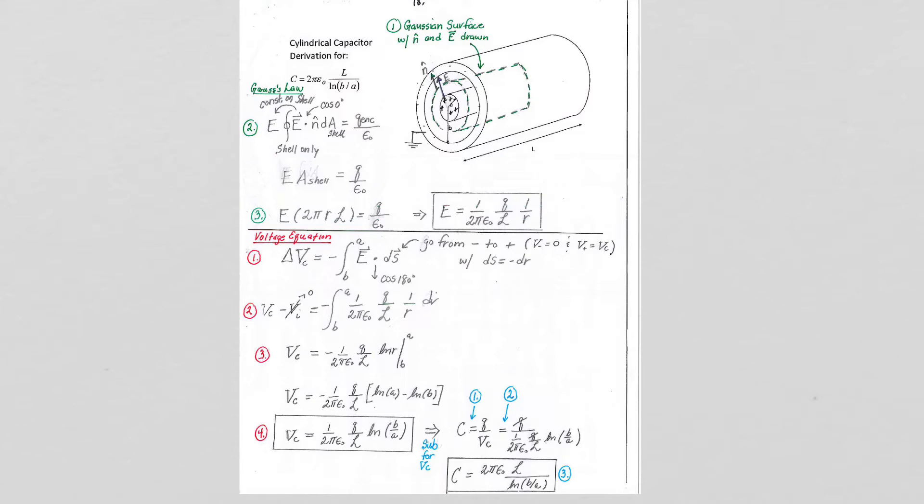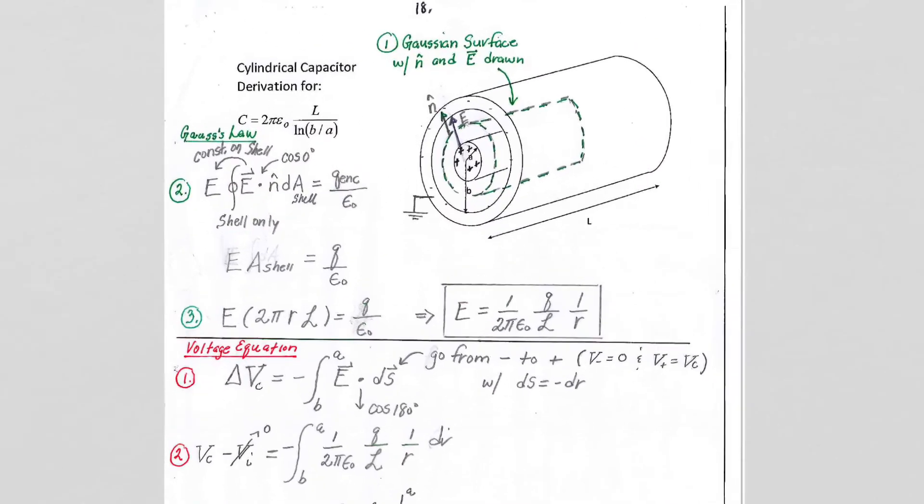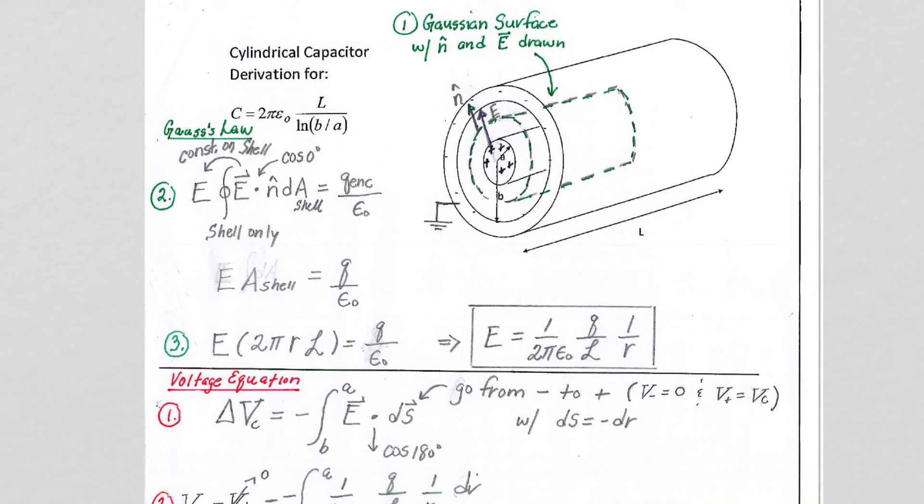So the cylindrical capacitor has an inner solid cylinder, I'm going to zoom in here now. It has an inner solid cylinder that's positively charged, and the outer cylinder is a cylindrical shell where all of the negative charge is.